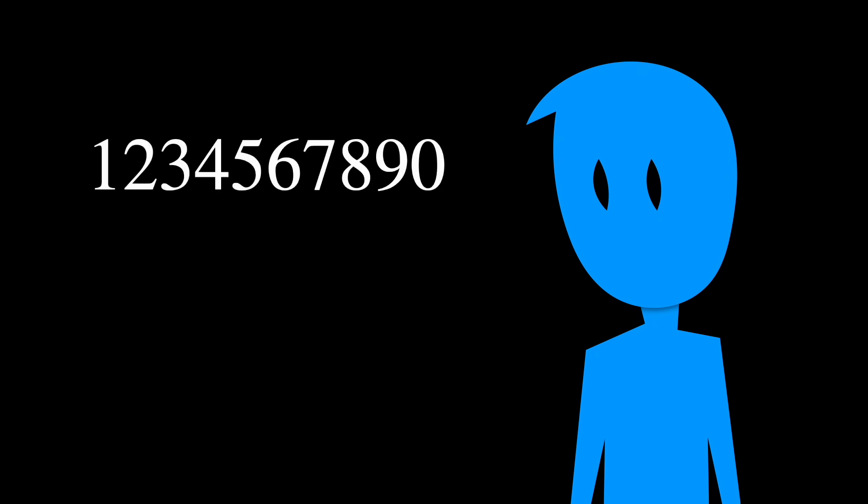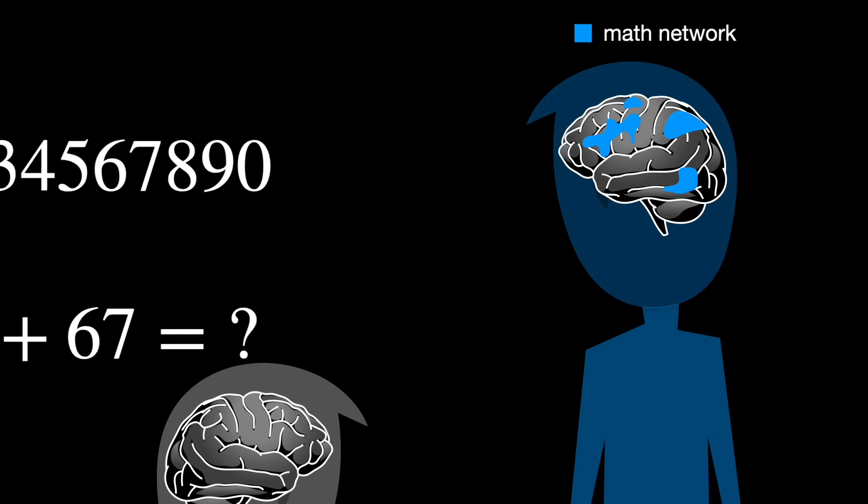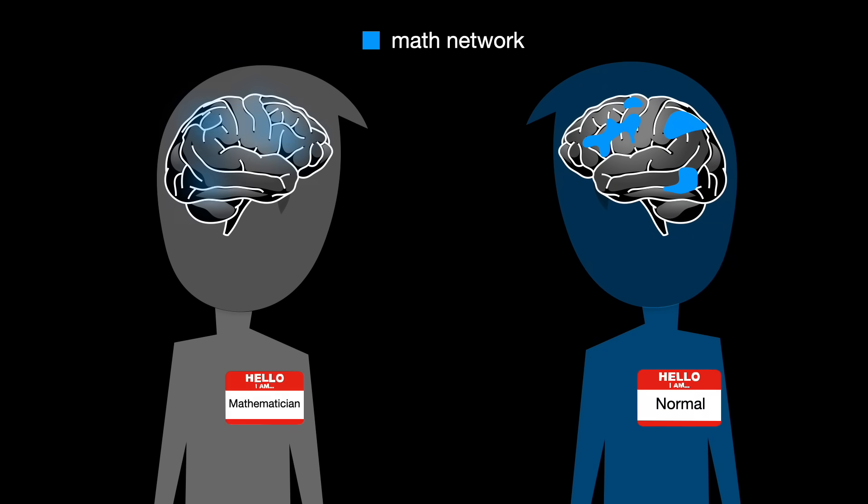An important thing to say is that when the controls were shown Arabic numerals, or were asked to perform simple calculations, their math network also lit up. This means that everyone, not only mathematicians, have these neural networks.